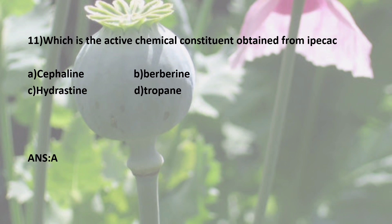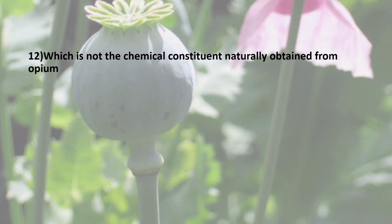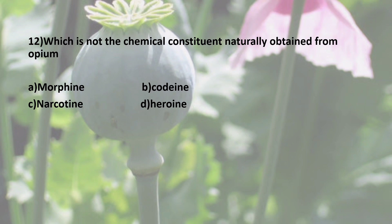Twelfth question: Which is NOT a chemical constituent naturally obtained from Opium? Options are: A) Morphine, B) Codeine, C) Narcotine, D) Heroin. The correct answer is D — Heroin is not naturally obtained from Opium; it is a semisynthetic derivative.